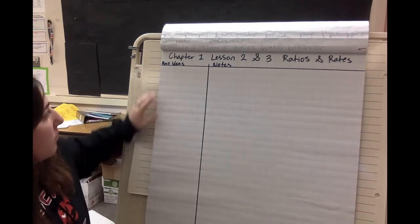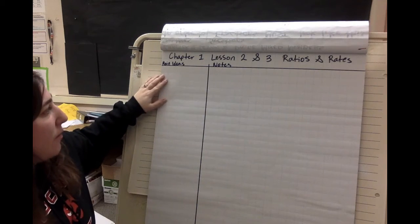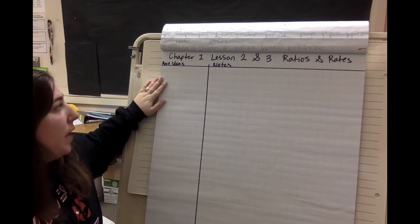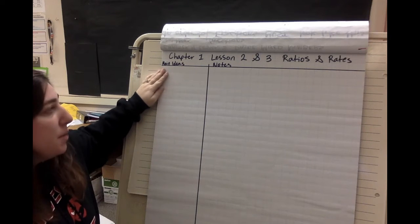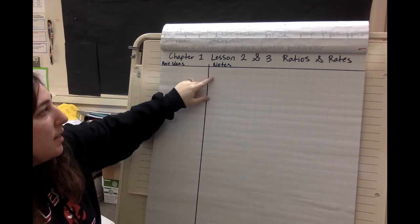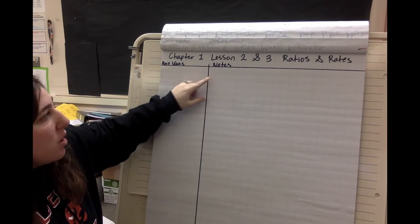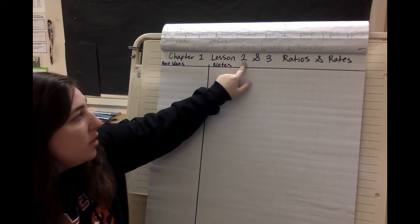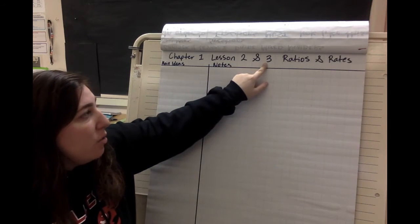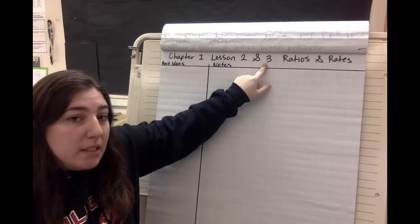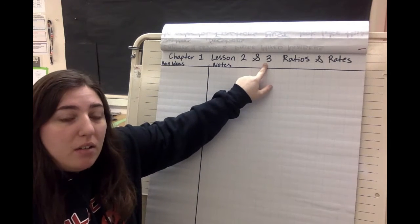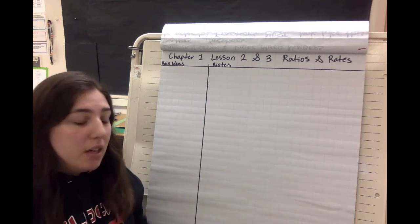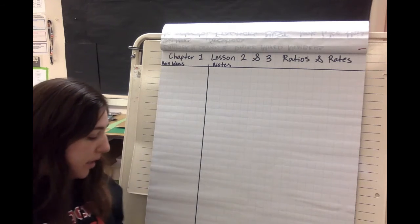Make sure you have your focus notes and you have your two columns — the main ideas and the notes column. We are doing Lessons 2 and 3. You need to have this title in your notes and written in your table of contents.